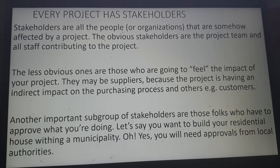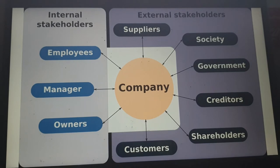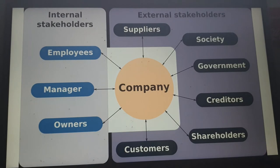Stakeholders come in all shapes and sizes. A company has both internal and external stakeholders. Internal stakeholders are employees, managers, and owners. External stakeholders include suppliers, society, government, creditors, shareholders, and customers. All these groups have an interest one way or another in a company.